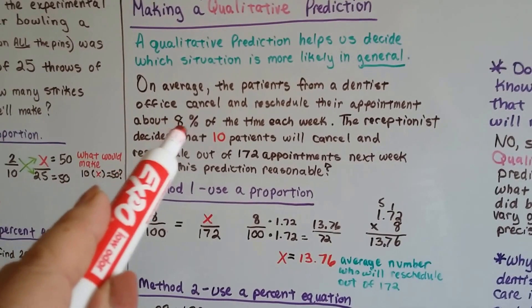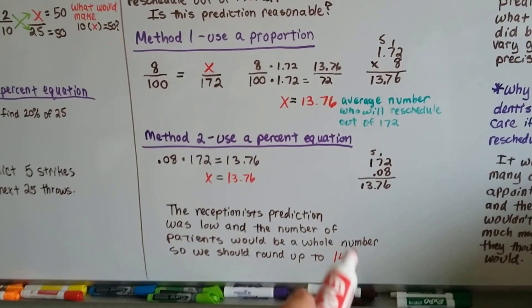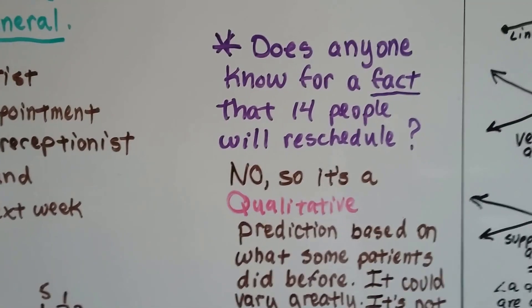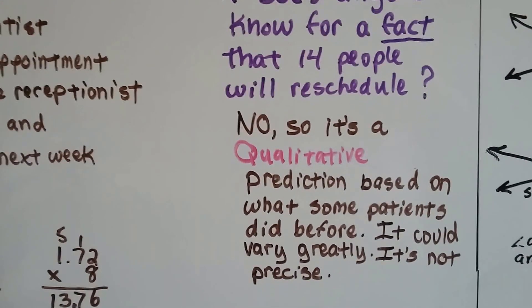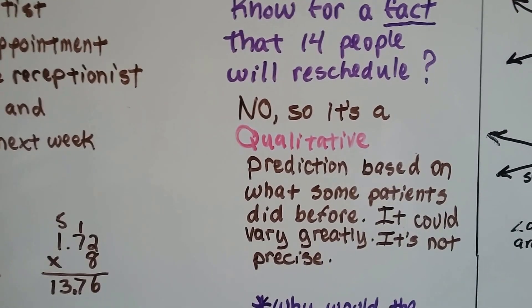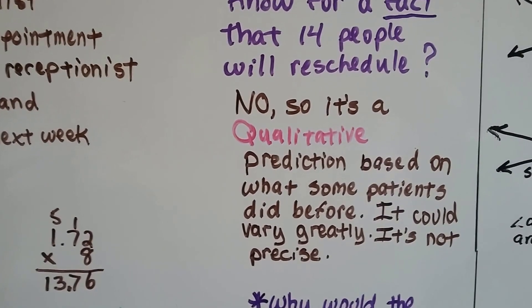So, because she guessed 10, her guess was low, and it would actually be more around 14. Now, does anyone know for a fact that 14 people will reschedule? No. It's a qualitative prediction based on what some patients did before. It could vary greatly, and it's not precise.